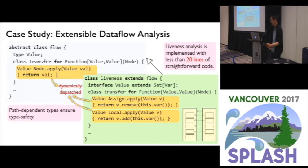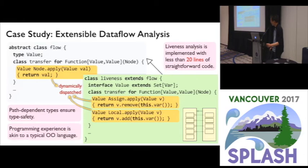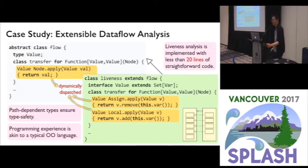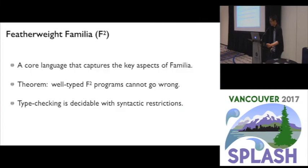Polymorphism is known to cause type safety issues for the same reason that downcasts are required when extending nested components individually. Following previous family polymorphism approaches, Familia uses path-dependent types to ensure type safety. But as the code indicates, typically there is no need to write out the paths as they can be inferred by Familia, so the programmer can program in a way largely similar to a typical OO language, balancing modularity and extensibility.